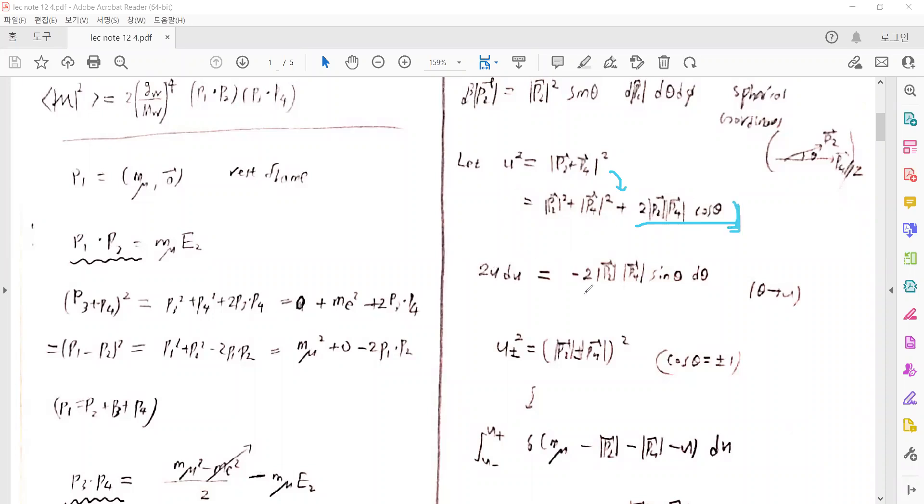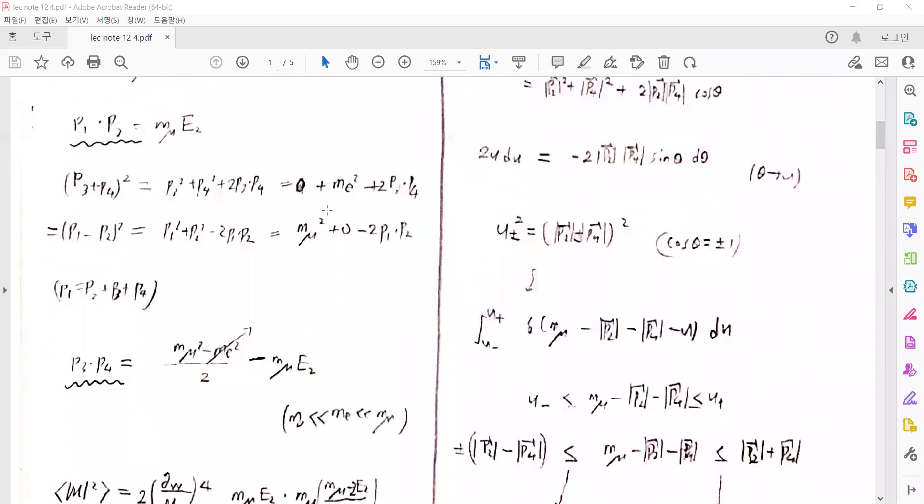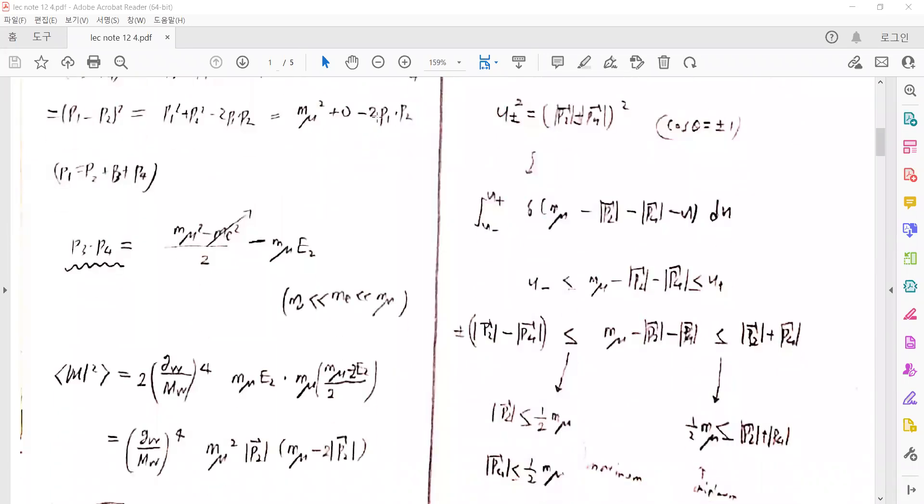Let U equal P2·P4 and calculate U squared. Then we find there are some theta terms, just simple algebra. We can calculate how to represent the integral in terms of U instead of theta. Then d(theta) can be changed to dU. Originally the integrals and intervals are from minus one to one, but in dU there is a maximum U and minimum U equal to U_plus and U_minus.